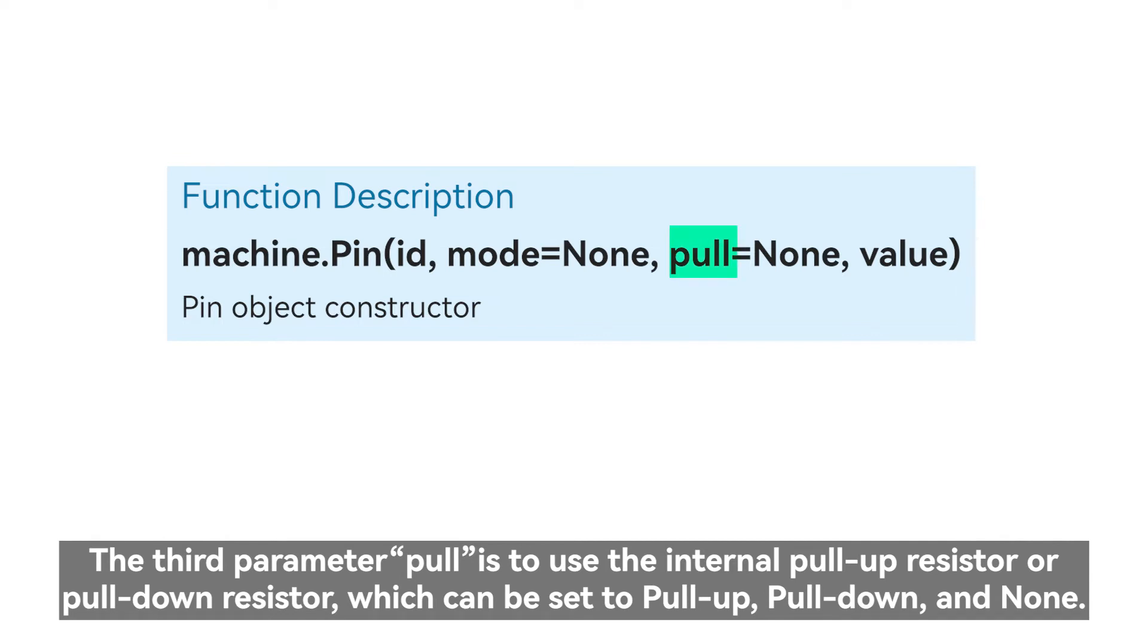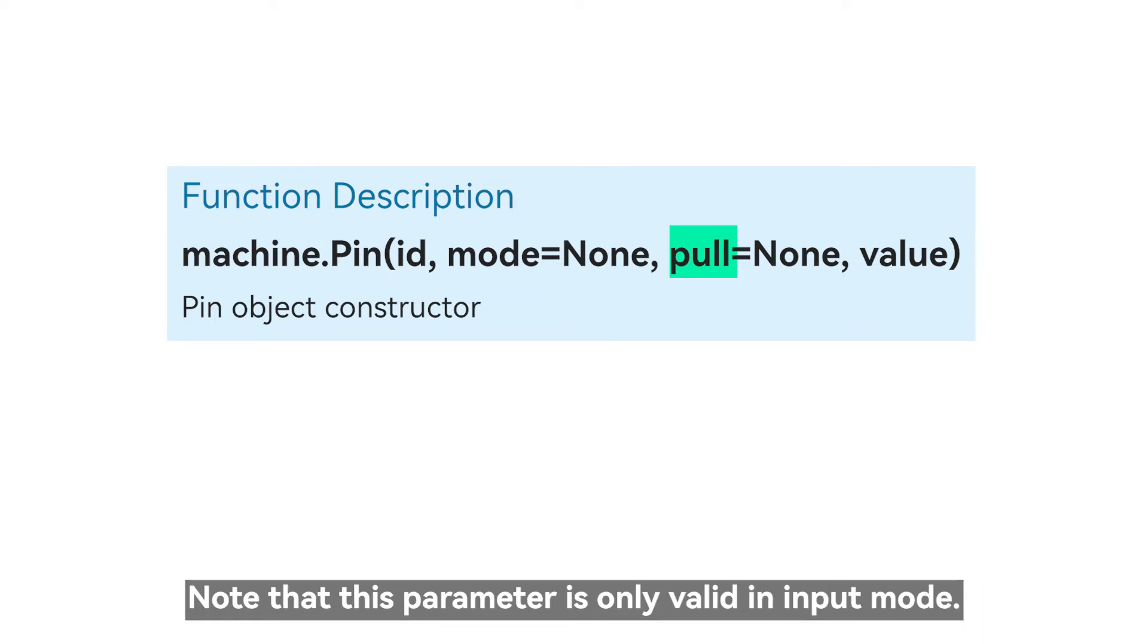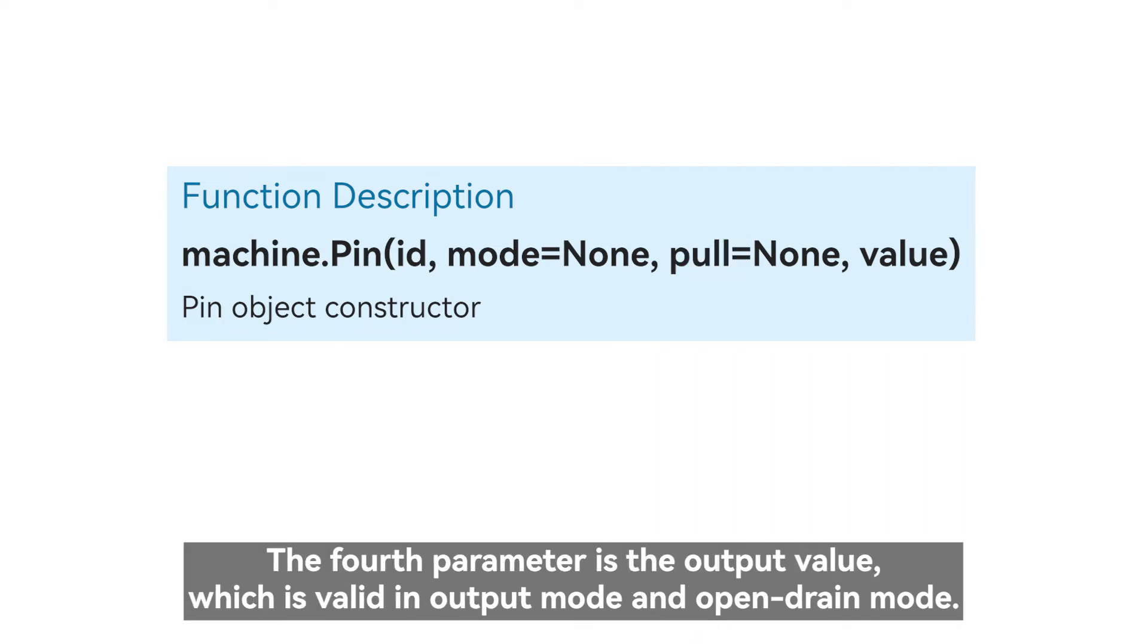The third parameter pull is to use the internal pull-up resistor or pull-down resistor, which can be set to pull-up, pull-down, and none. Note that this parameter is only valid in input mode. The fourth parameter is the output value, which is valid in output mode and open drain mode.